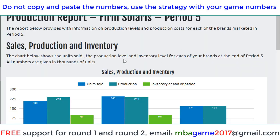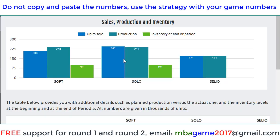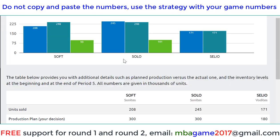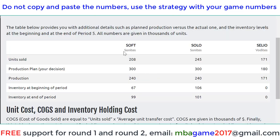I'll show you the details now. You can see on the screen the sample of the production reports. You can see the details for Soft, the details for Solo, the details for Cellular - the number one, number two, and number three products. You can see the unique results here, and also we can see the inventory.